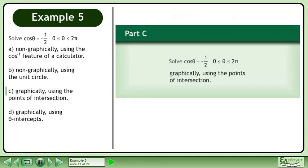In Part C, solve cos theta equals negative 1 over 2 graphically using the points of intersection.